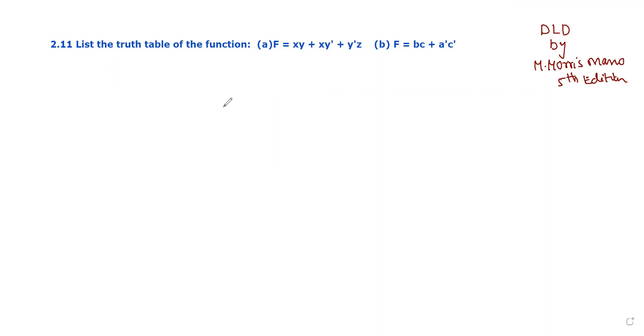This belongs to Boolean algebra. List the truth table of the function: f = xy + xy' + y'z and f = bc + a'c'.